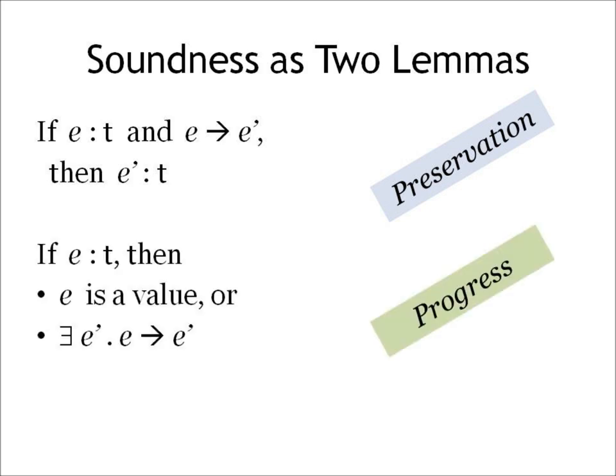The other one says that if E has type T, then either E is already a value, we're done, or there must exist some term that E can reduce to. In other words, if the program has a type, then the program will not get stuck. This is called progress.